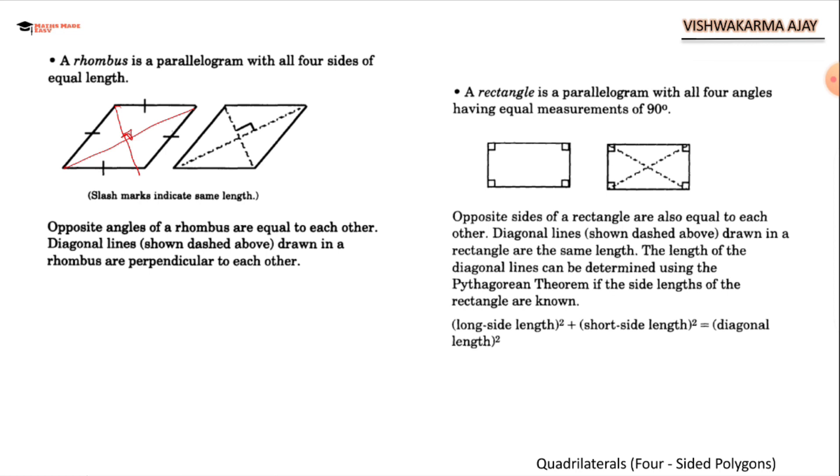A rectangle is a parallelogram with all four angles having equal measurement. Rectangle is also a parallelogram because opposite sides are parallel to each other. But along with that, it has a special characteristic. That is, all the angles are 90 degrees. Opposite sides of rectangle are also equal to each other. Diagonal lines drawn in the rectangle are the same length. Both the diagonals are of same length, not like parallelogram or rhombus.